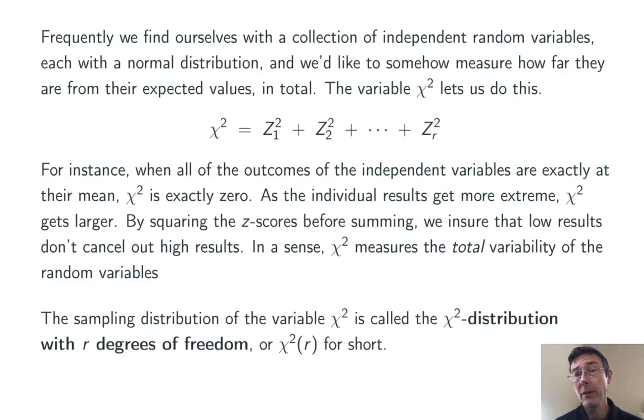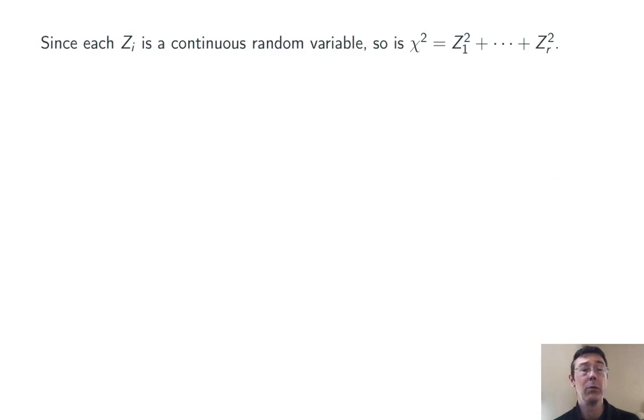The sampling distribution of this random variable, chi-squared, is called the chi-squared distribution with r degrees of freedom, or χ²(r) for short. Notice that we're using the words chi-squared here to refer both to that random variable defined up above and the distribution of that random variable. Usually the context will make it clear which one we're talking about.